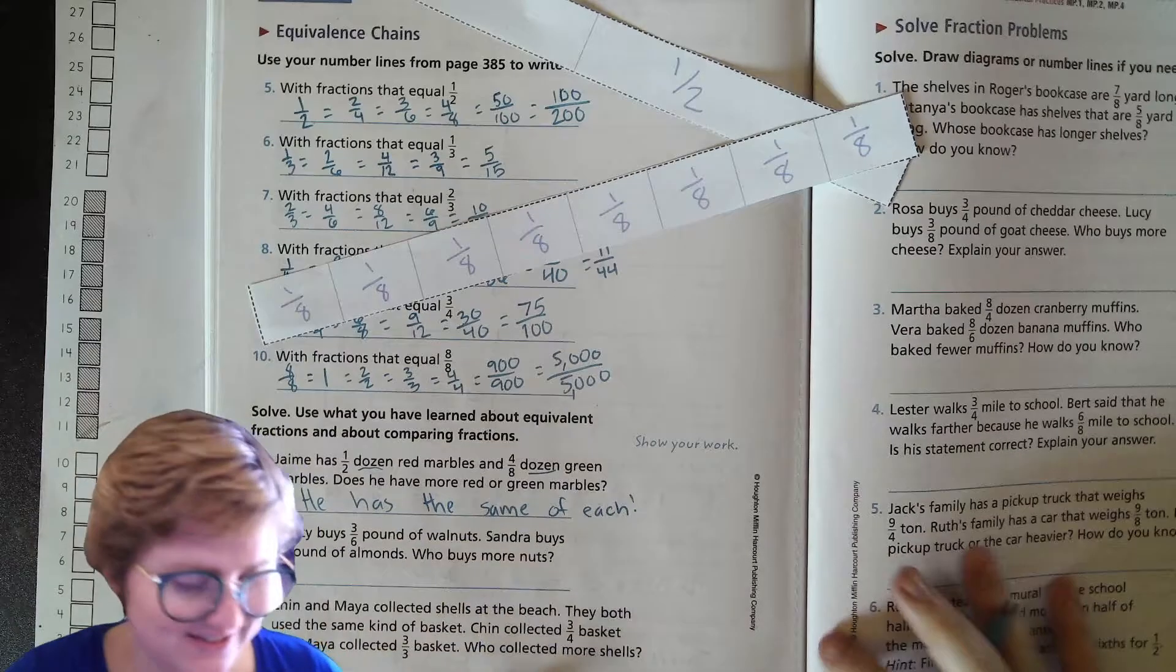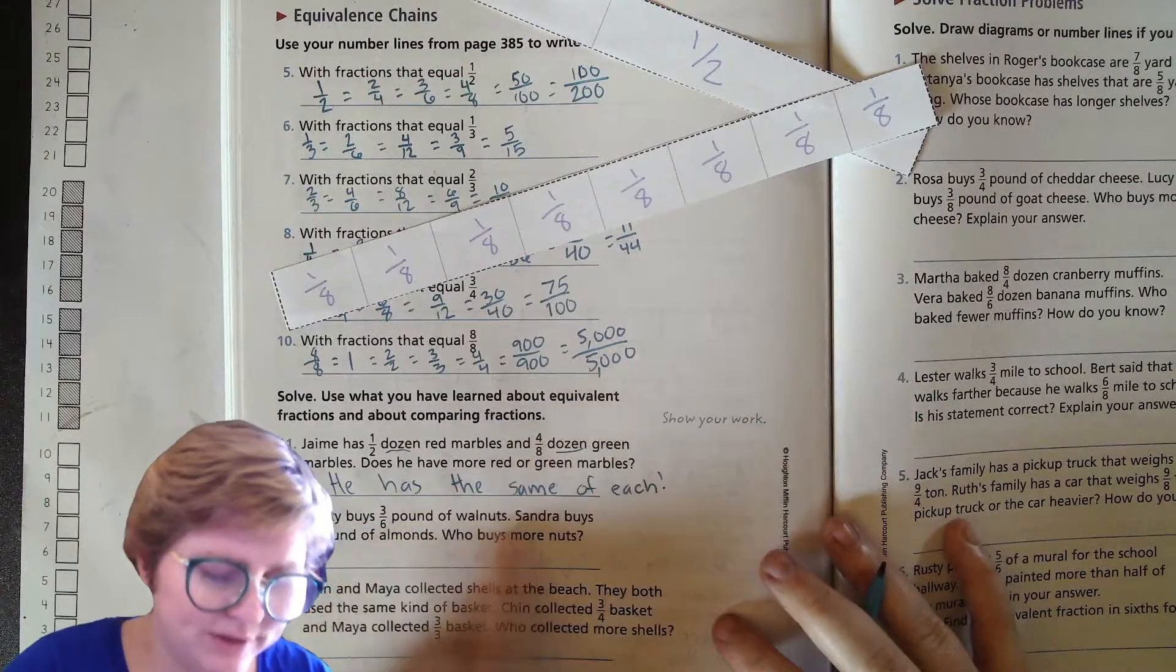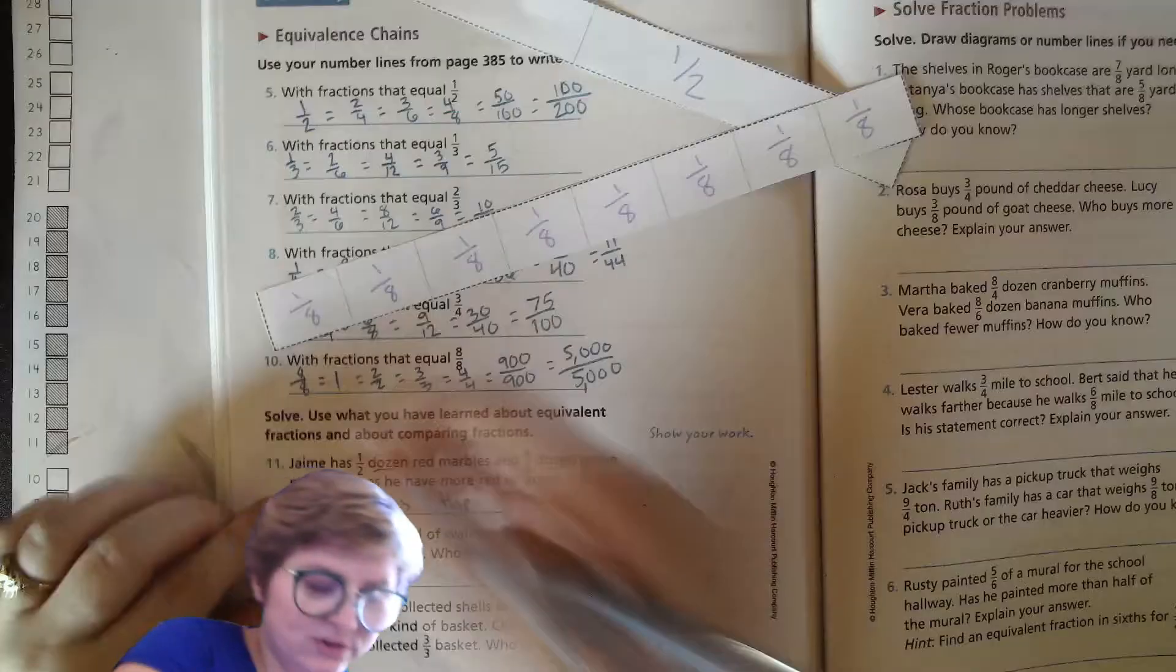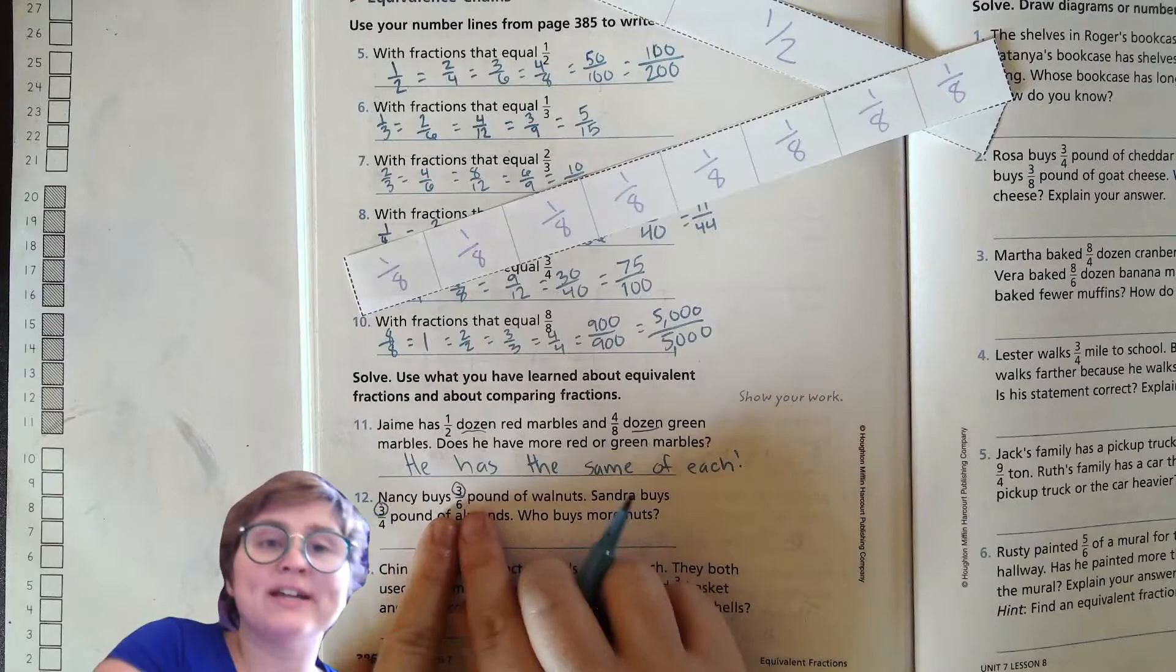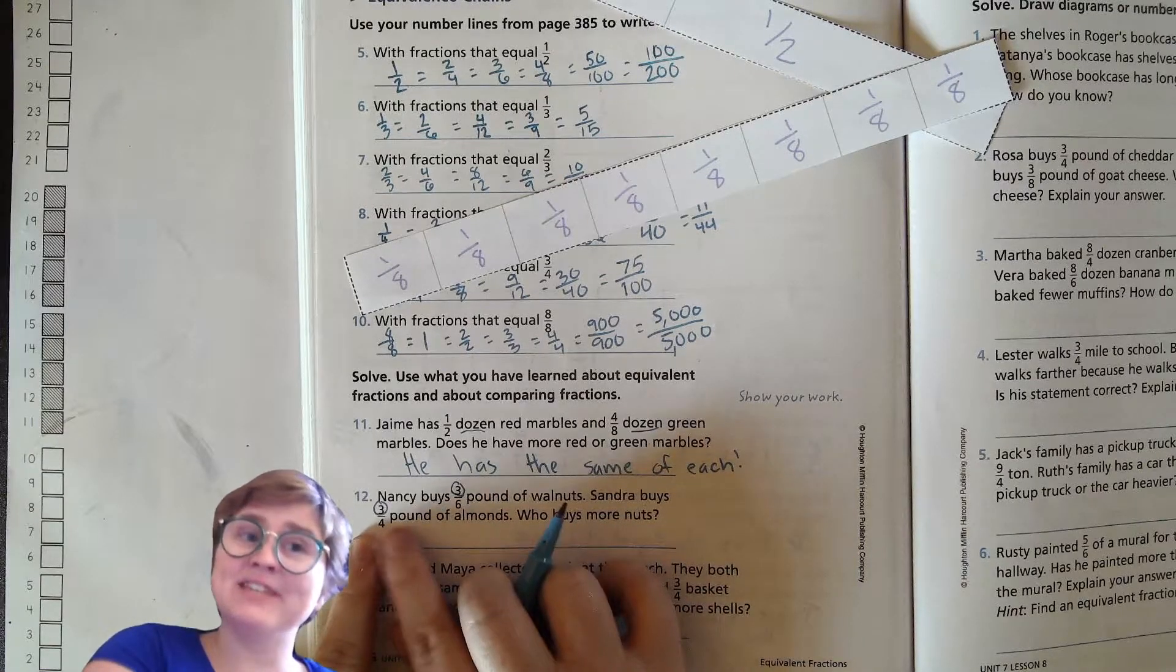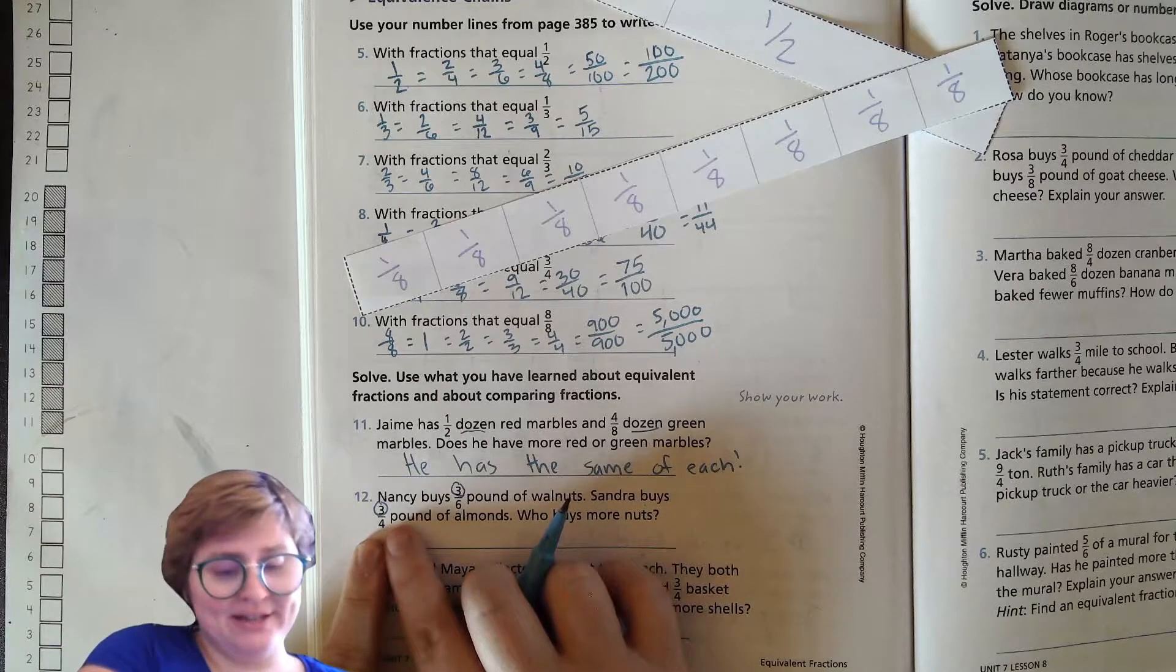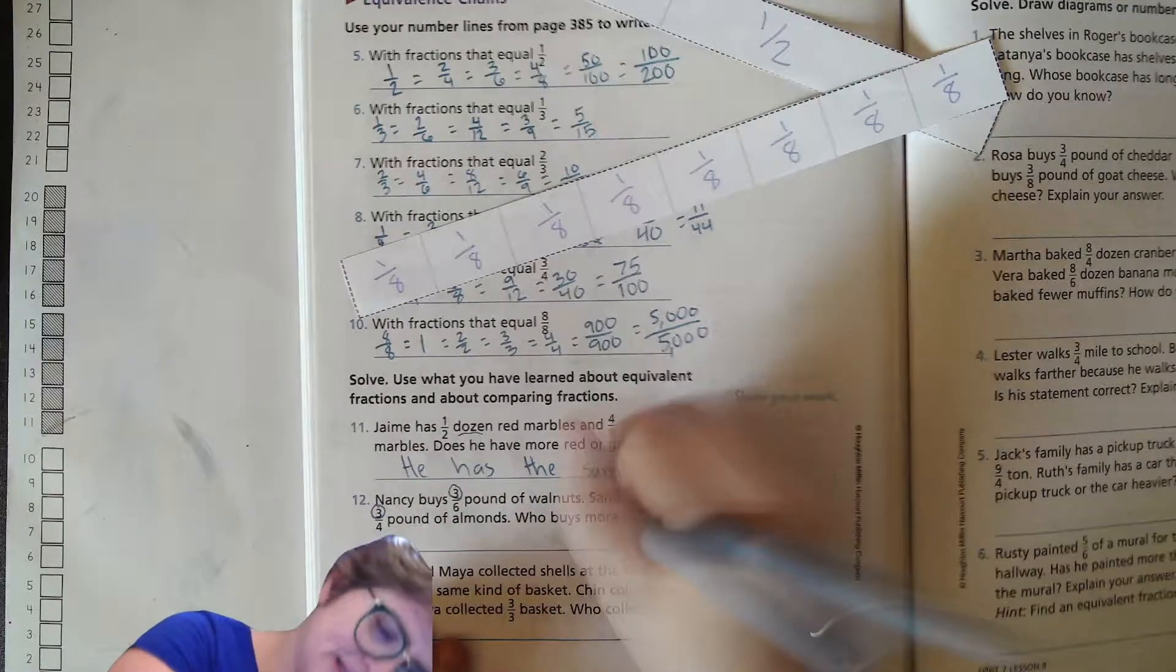Nancy buys three-sixths pound of walnuts. Sander buys three-quarters pound of walnuts. Now with this one, if you just look at the numerator, they're the same, right? The numerator is the same for both of those. This one is in more pieces - that whole has been broken into six pieces, where this whole has been broken into four pieces, which means each of these pieces is bigger. So three bigger things is more all together than three smaller things. So that means Sander bought more nuts.